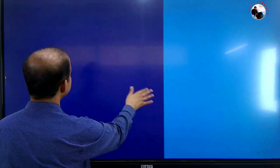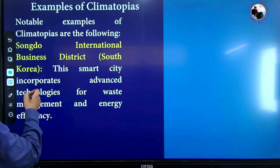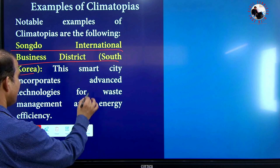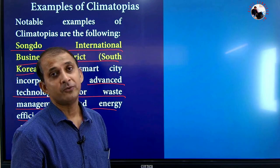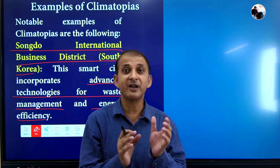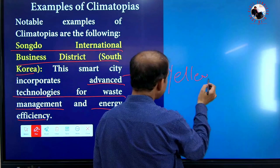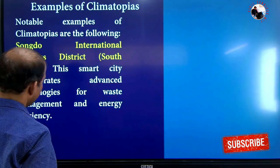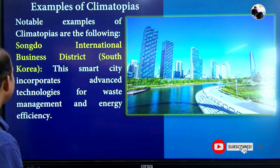Some notable examples of climatopias are: first, Songdo International Business District in South Korea — a smart city that incorporates advanced technology for waste management and energy efficiency. This city recycles wastewater and also reclaimed land from the Yellow Sea, making it a very significant example of climatopia in practice.